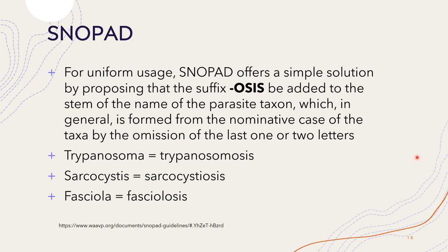Trypanosomosis refers to several diseases in vertebrates caused by parasitic protozoan trypanosomes of the genus Trypanosoma. Sarcocystosis is a parasitic zoonotic disease commonly observed in domestic animals such as buffaloes, cattle, and pigs. Fasciolosis is a parasitic worm infection caused by the common liver flukes Fasciola hepatica and Fasciola gigantica.